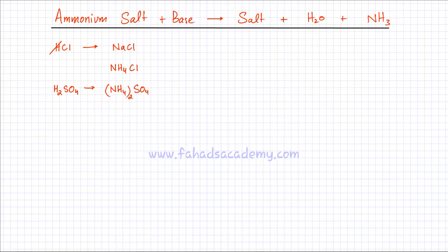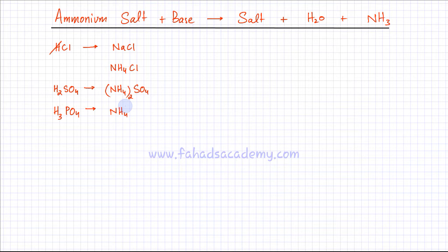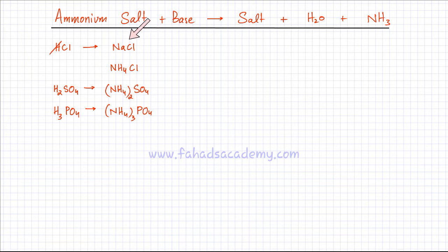Let's think of another ammonium salt by picking phosphoric acid, H3PO4. Neutralize it, get rid of the hydrogen ions, and substitute with positive ammonium ions. NH4 has a charge of +1 and PO4 is 3-. Using the crisscross method, there would be 3 ammonium ions. The overall charge on ammonium phosphate is 0.